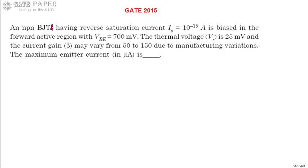Hello, we are discussing GATE 2015 ECE paper. An NPN BJT having reverse saturation current of 10^-15 amperes is biased in the forward active region with VBE of 700 millivolts. The thermal voltage VT is equal to 25 millivolts, and current gain beta varies from 50 to 150 due to manufacturing variations.